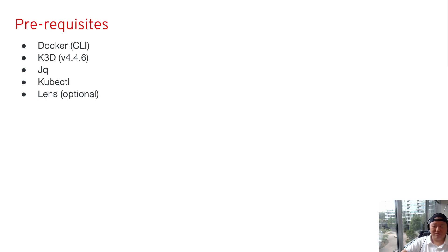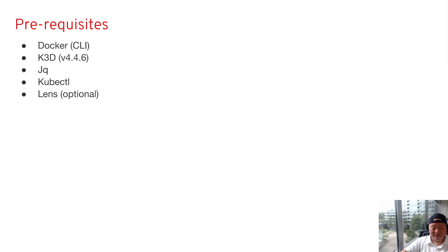Docker is important here because at the end of all this, your local Kubernetes cluster will actually consist of various Kubernetes master and worker node containers running in Docker. Next, you're going to want to make sure you have the K3D application installed — this will allow you to create and destroy clusters. And finally, you're going to need the kubectl command line tool for interacting with your cluster.